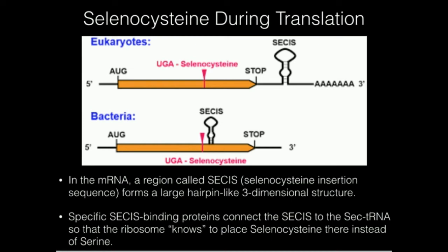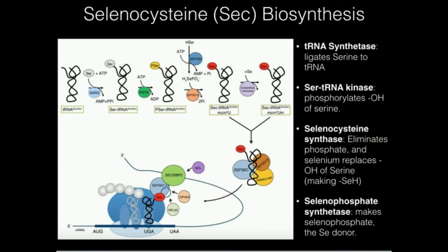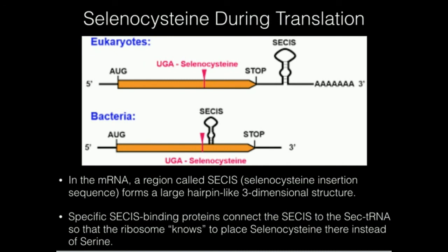This SECIS sequence is in the mRNA downstream, more towards the three-prime end, in any mRNA that needs to code for a selenocysteine. It forms a hairpin-like structure that creates a massive tertiary structure in the mRNA that is recognized by these binding proteins. The binding proteins on one side recognize the tRNA with the selenocysteine, and on the other side they recognize the SECIS — the selenocysteine insertion sequence — this tertiary structure right here. In doing so, they bind with the mRNA on this hairpin-like structure and direct the tRNA into the spot where it needs to add the selenocysteine.